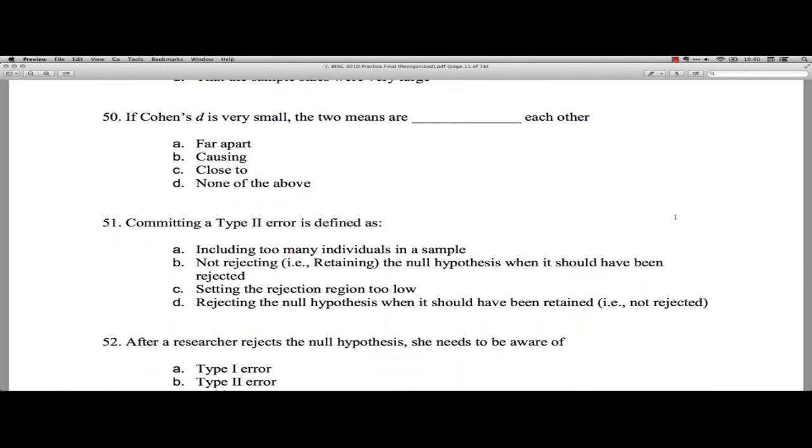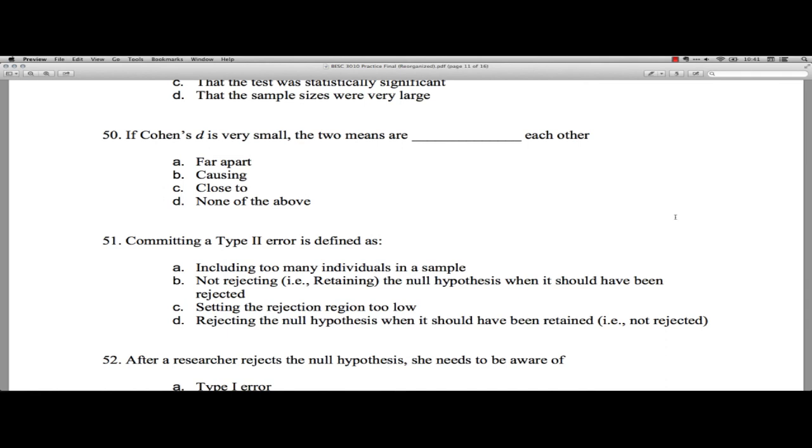All right, 50. If Cohen's D is very small, the two means are blank each other. If Cohen's D is very small, again, it's measuring how many standard deviations there are between the means. And so if it's very small, the two means are A, far apart. No, because that's the opposite. B, causing each other. No, Cohen's D has nothing to do with causality. You have to have an association for causality, but causality has to do with the design of the study, not with the actual statistic here. So that's nothing else. So B is irrelevant. C, the two means are close to each other. Yeah, if Cohen's D is small, then there's not many standard deviations between the samples. So the two means are close to each other. So C is the correct answer. And, of course, none of the above, that's not true. Okay, and we'll stop right there for this section, and we'll pick up with question 51.